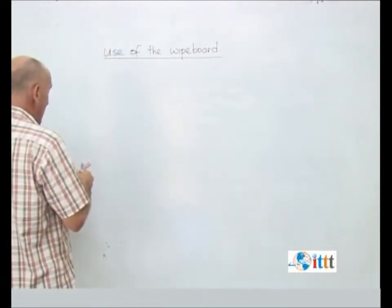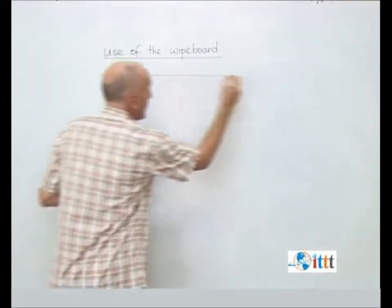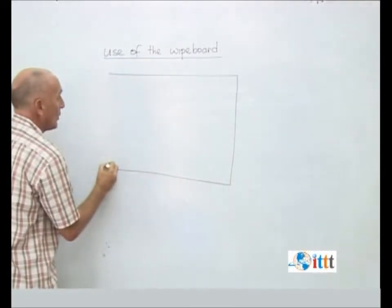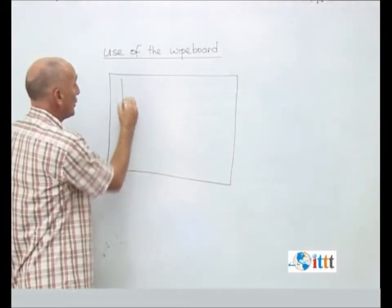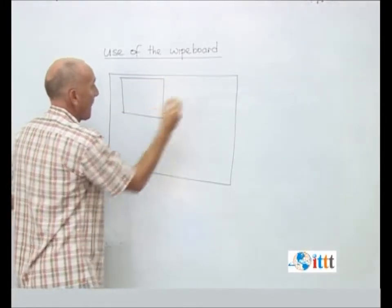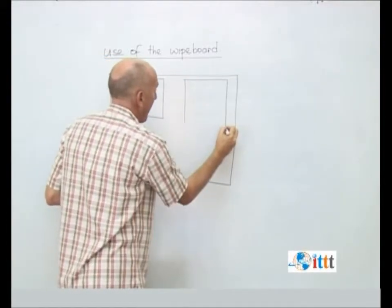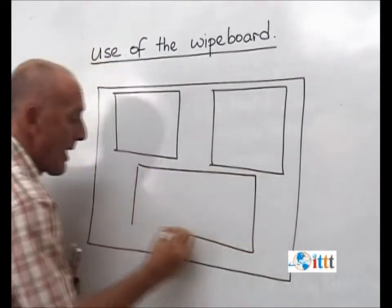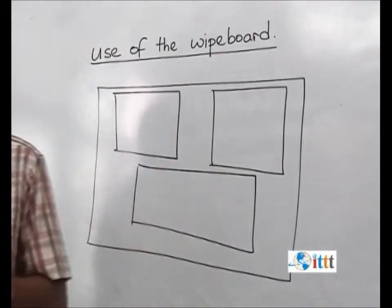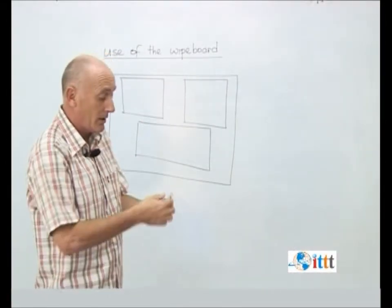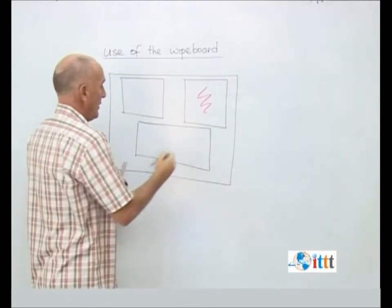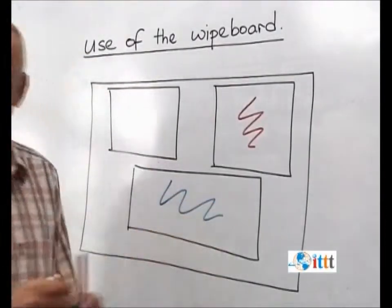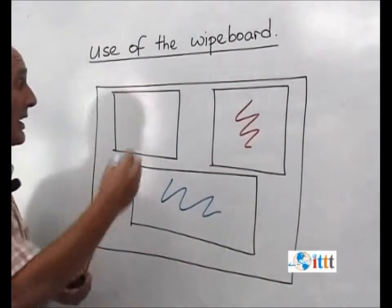So by starting with a clean board, decide on which areas of that board are going to be used for various types of information. And then within that, the use of different colors for different types of information.